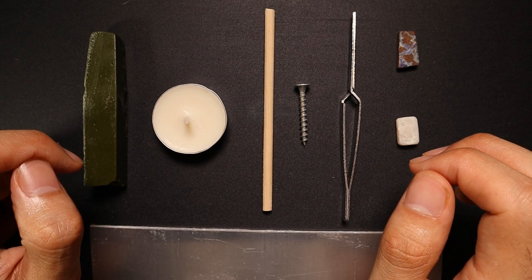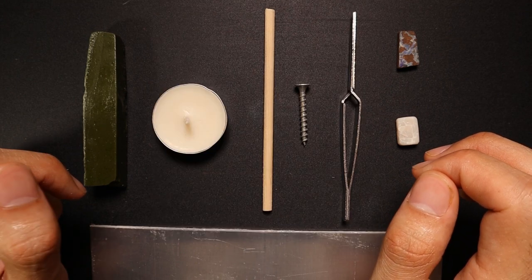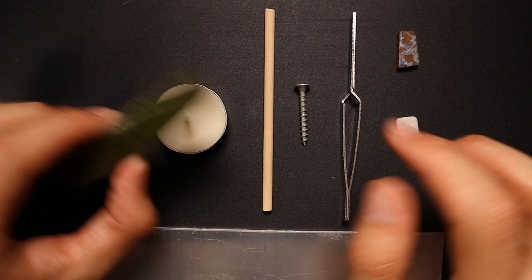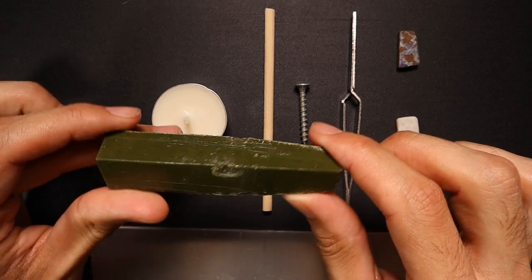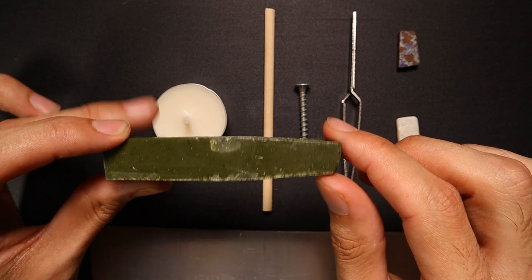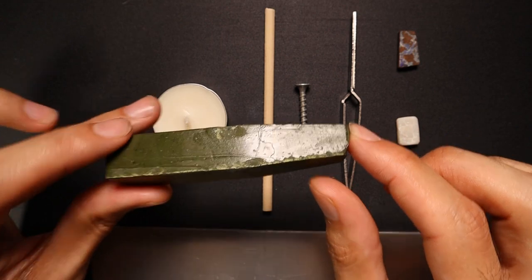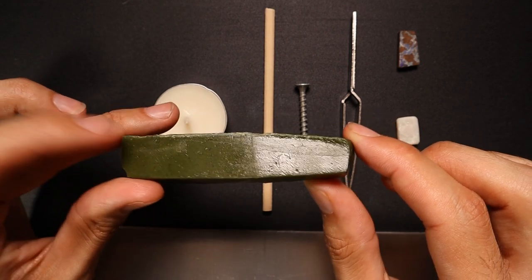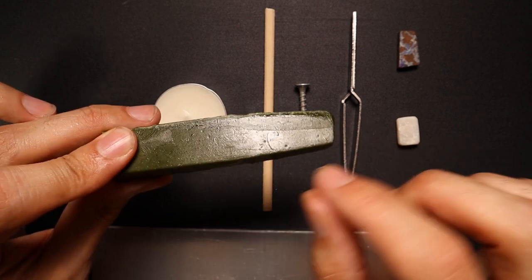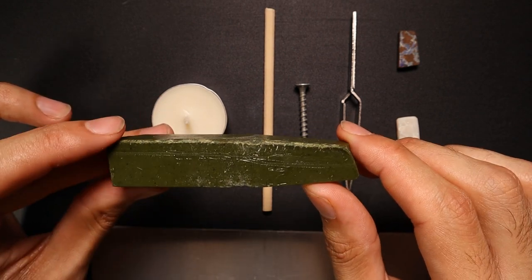Sometimes this does leave a bit of a residue or deposit if you get too close to it. You can also get these special doping stations. Now the dop stations I have not had any good experiences with. Typically, I'm using the green doping wax because this is ideal for temperature sensitive stones like opal. And if you heat them up too much, they're going to crack, they're going to split, they're going to shatter.